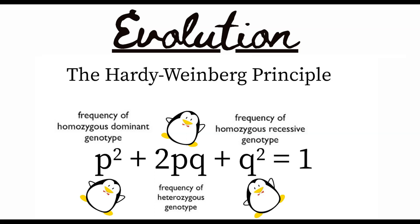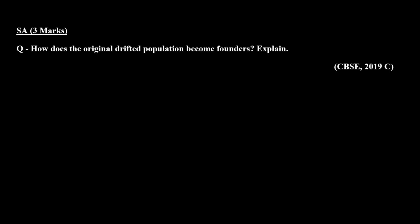Hello everyone. We are discussing previous year questions of the chapter Evolution and the topic Hardy-Weinberg Principle. In today's session we are going to discuss a short answer question of three marks which was asked in the CBSE board 2019. The question is: How does the original drifted population become founders? Explain.